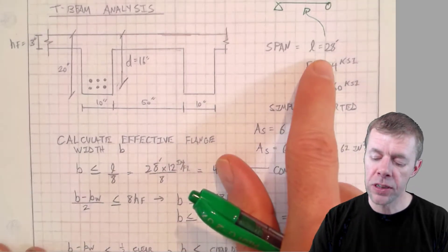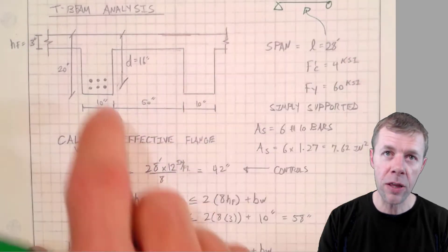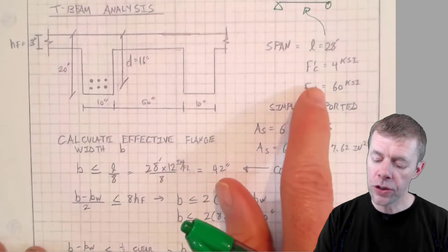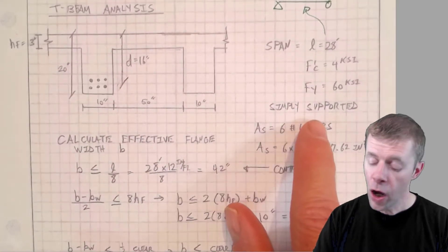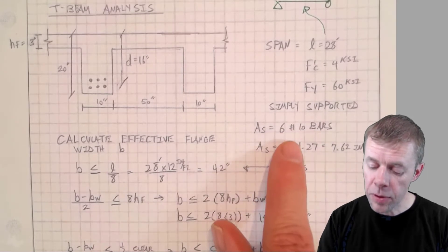We're given our span length, that's the distance between the supports, the distance into the page. We've got our concrete strength, our steel strength, we know we're simply supported, we know we're using six number ten bars.